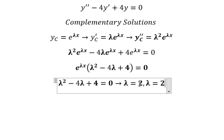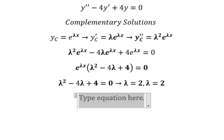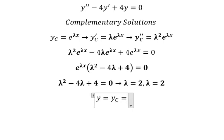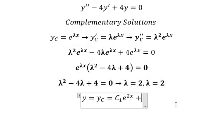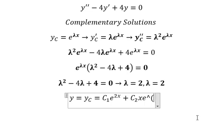We have lambda equals to 2 and lambda equals to 2, which means we have two solutions but they have the same value. So we have y equals to yc, and we have c1 times e to the power of lambda x, so we put 2 in here. Because they have the same root, we also have c2 times e to the power of 2x.